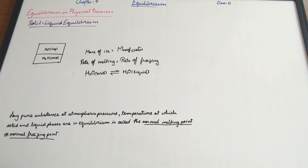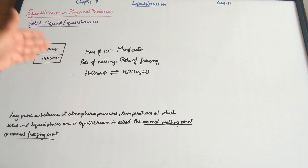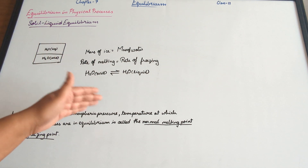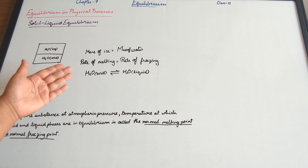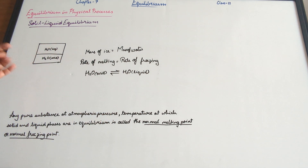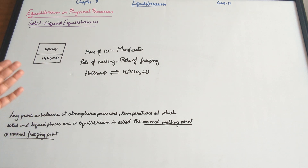From the above, we can figure out that both processes — melting and freezing — are taking place simultaneously, and the rate at which both occur is equal. So the rate of formation of ice equals the rate of formation of water.